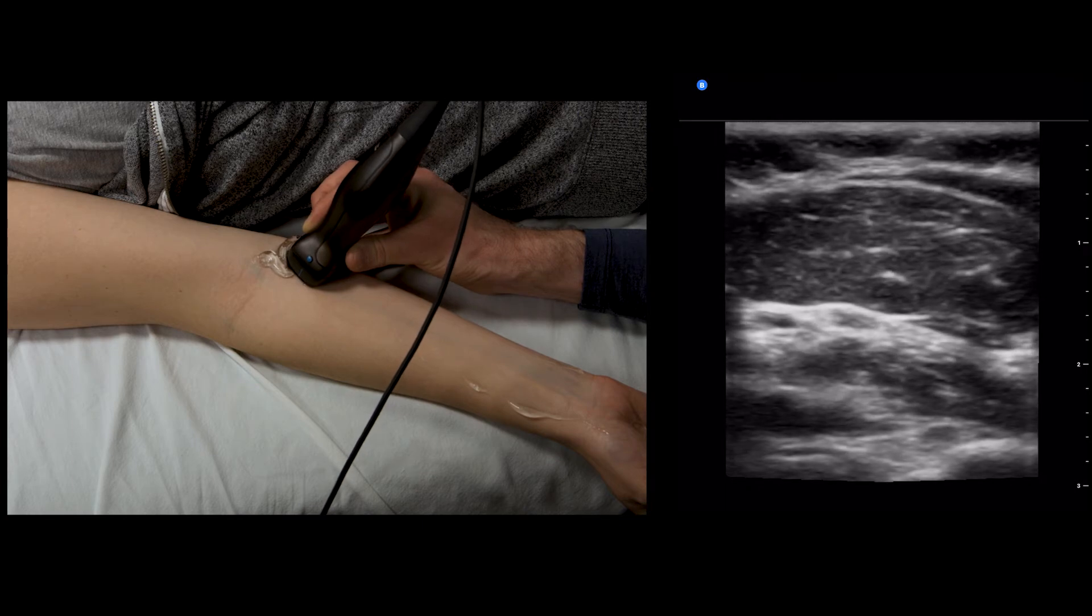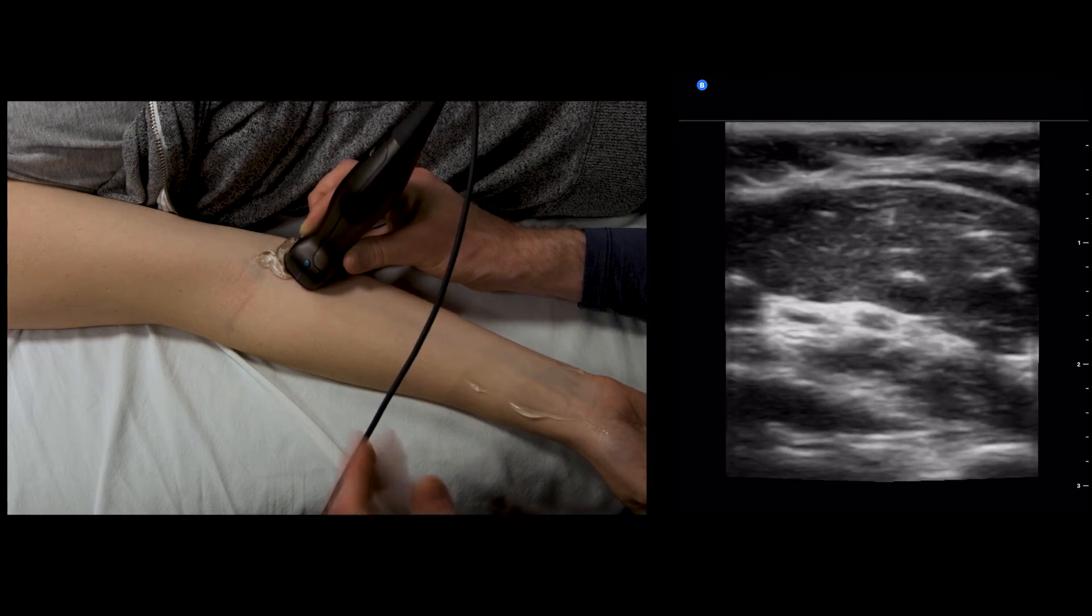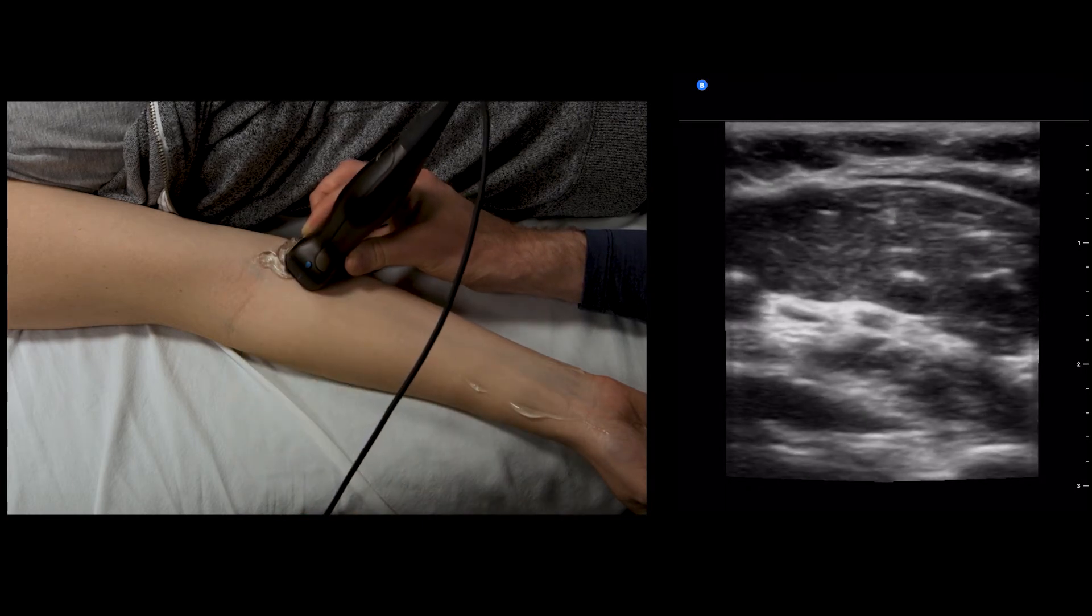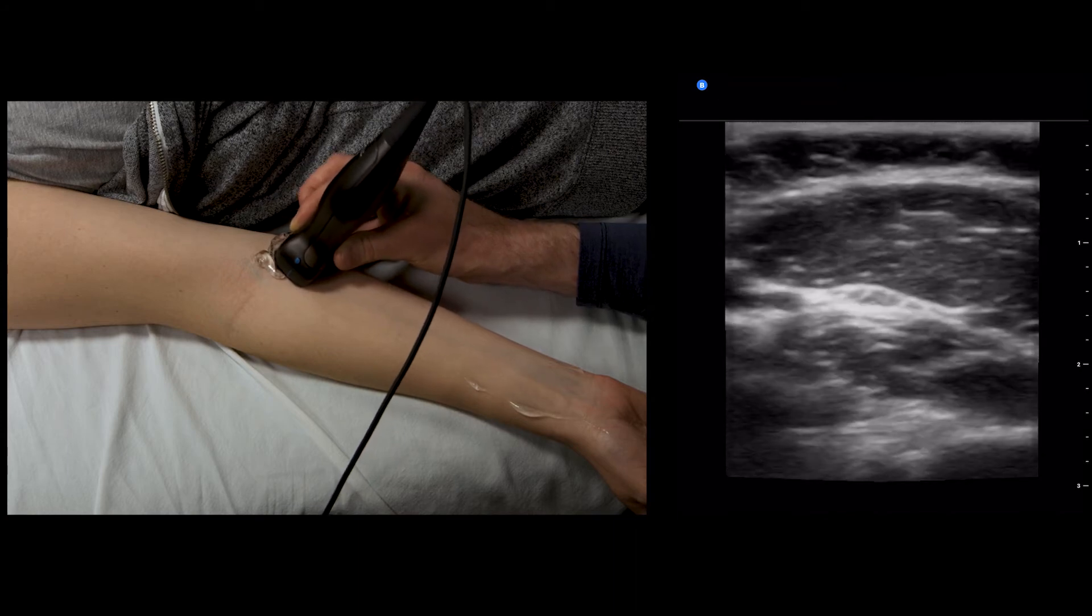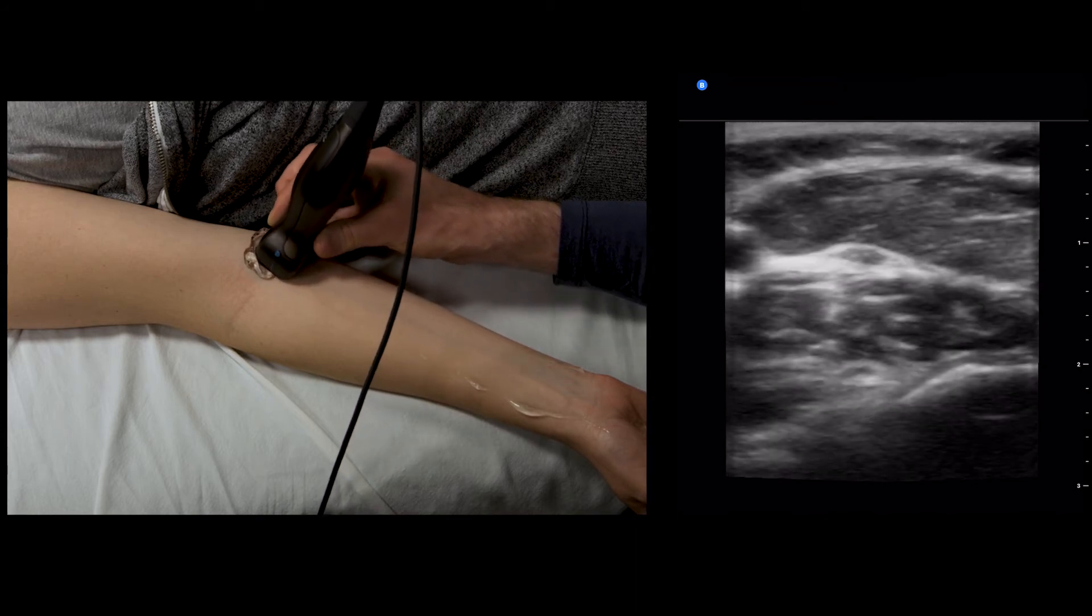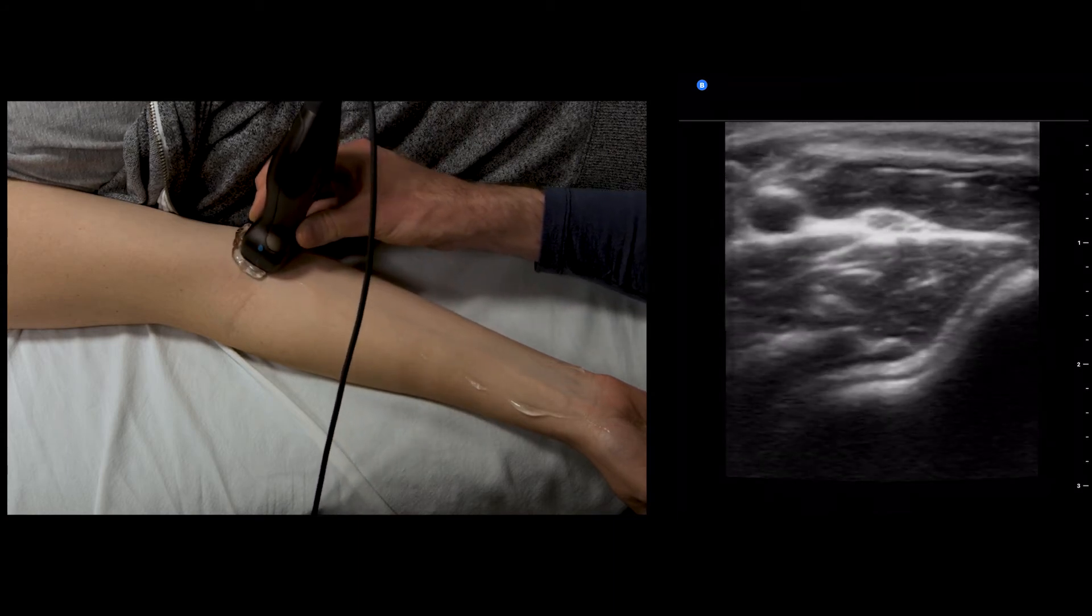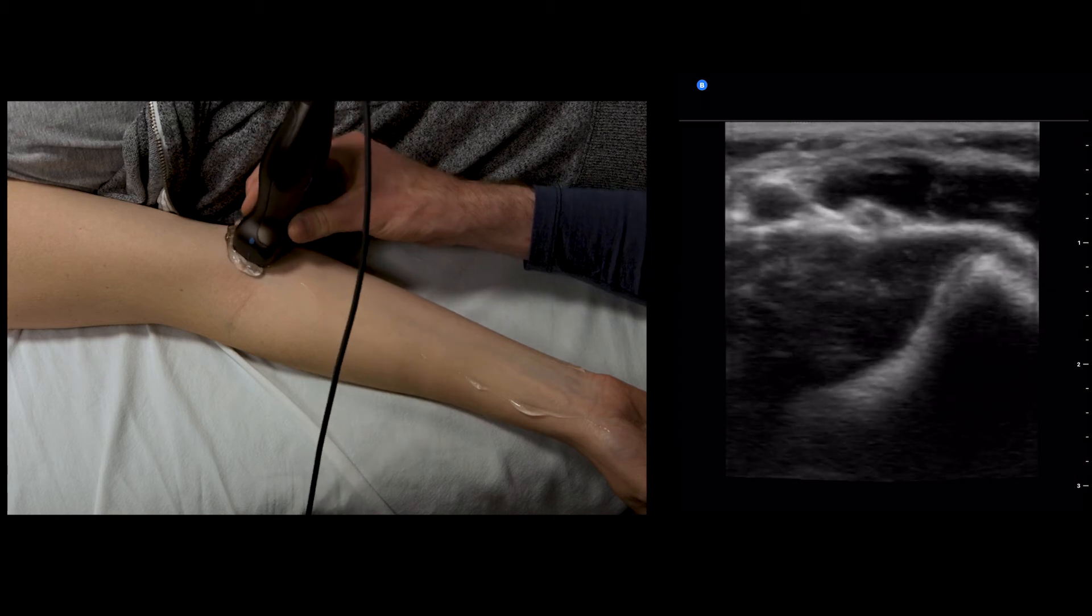The median nerve is going to go superficial again, so now we're wagging our transducer again so we can visualize the median nerve, and then follow it up to the level of the brachial artery.